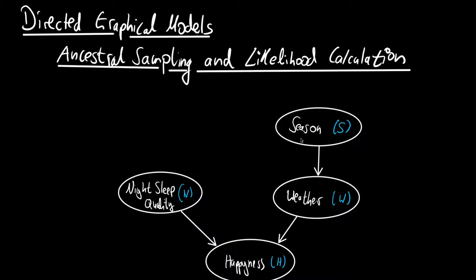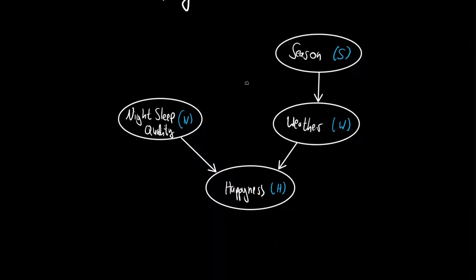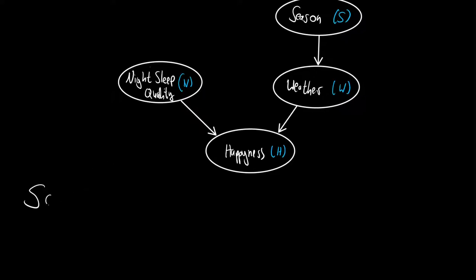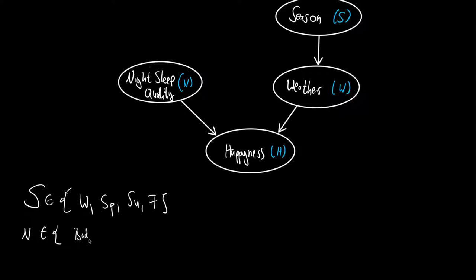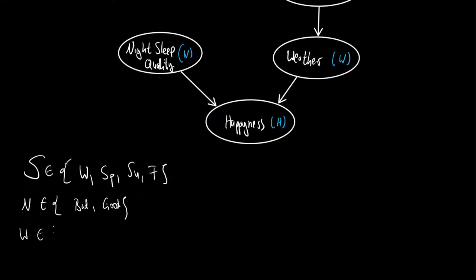Let's associate states with those random variables, or what they can take. Starting with the season: it can obviously be winter, spring, summer, and fall. Then the night sleep quality — this can be bad and good. The weather can also be bad and good. And to keep this kind of coding, let's put happiness also to be bad and good.